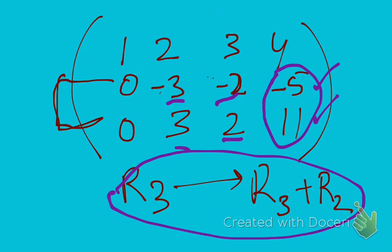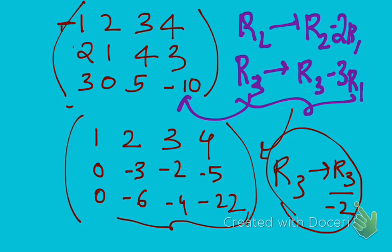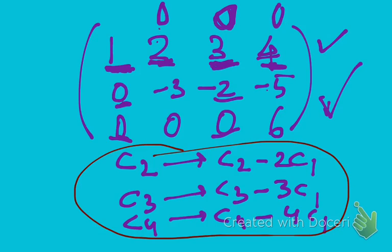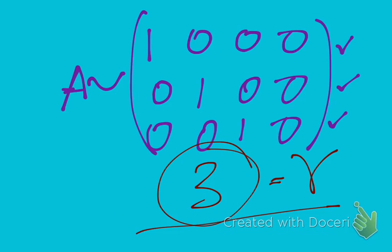This is how you find out the normal form of a matrix and hence its rank. To recap: we started with the parent matrix A, performed several row and column operations to reduce it to normal form, and finally the number of non-zero rows gives you the rank of the matrix. Thank you, have a lovely day — if you have an exam tomorrow, all the very best, and I hope this video has helped you.